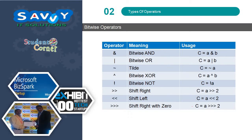The next category is Bitwise Operators: Bitwise AND, Bitwise OR, the tilde (Bitwise NOT), Bitwise XOR, Shift Right, Shift Left, and Shift Right with zero filling. These are the different kinds of Bitwise Operators.